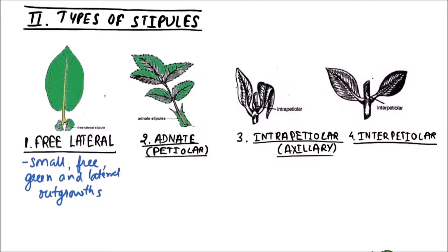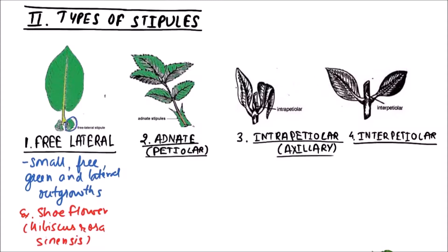The examples include Shoe flower, i.e., Hibiscus rosa-sinensis. We can easily observe the two Free Lateral stipules.